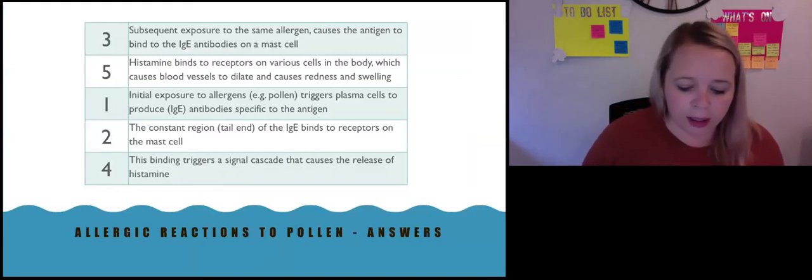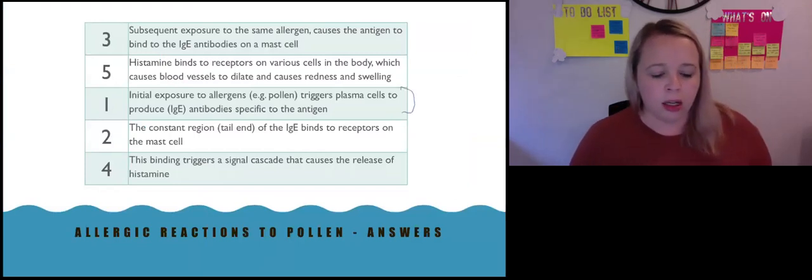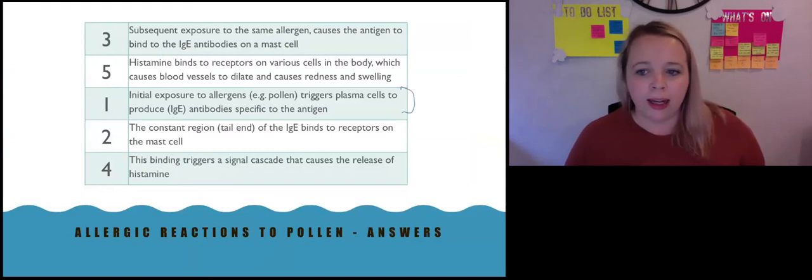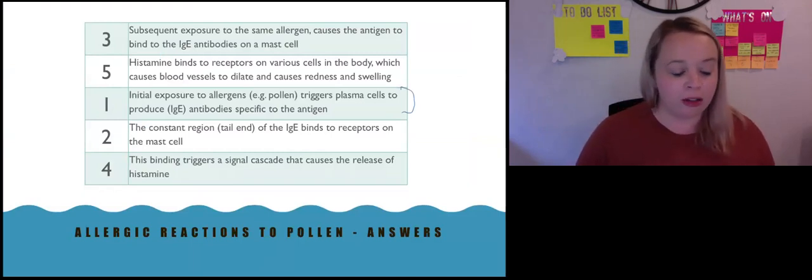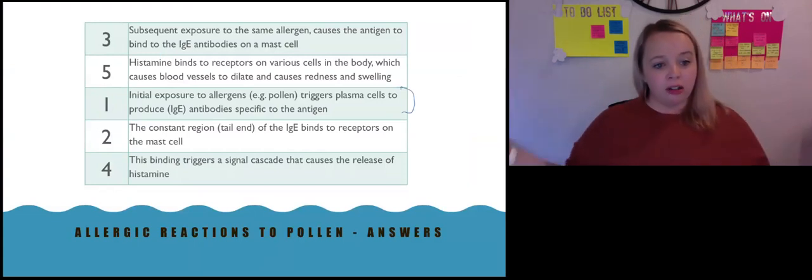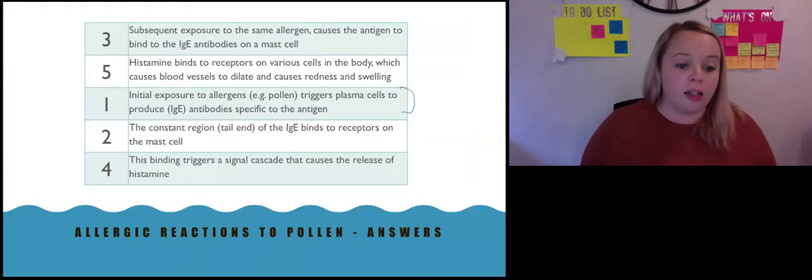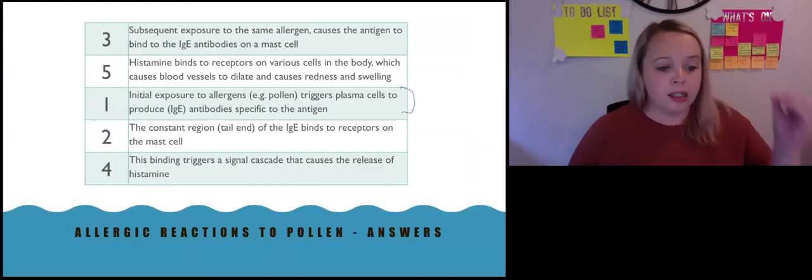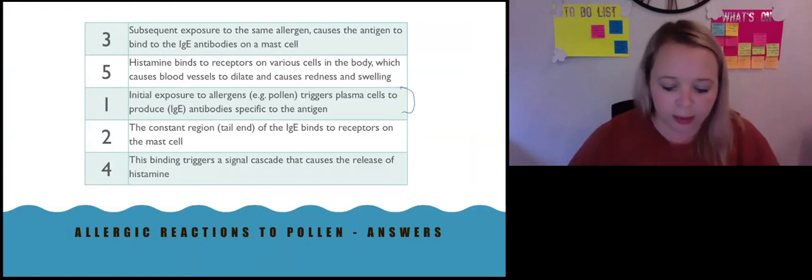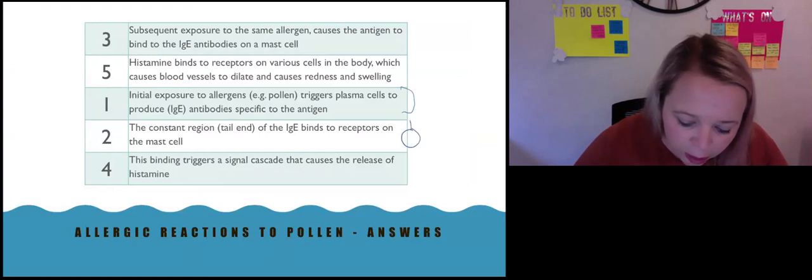The first thing that happens is you get initial exposure to the allergens will make antibodies. This is when I said we might talk about those IgE. IgE is not compulsory to know about, but it is nice to know that they are called IgE antibodies. The next thing is the constant region of that IgE binds to the mast cell, like so.